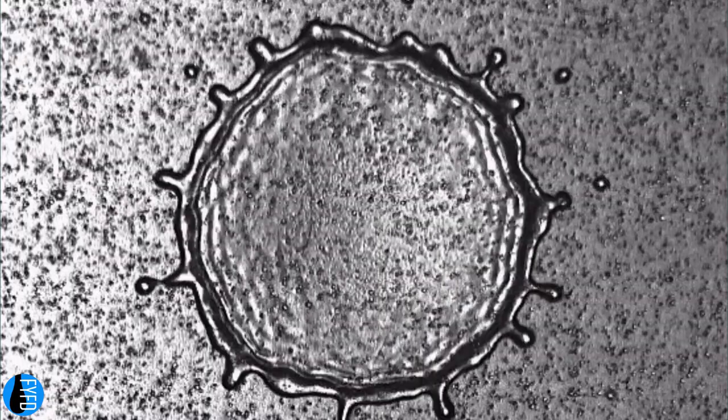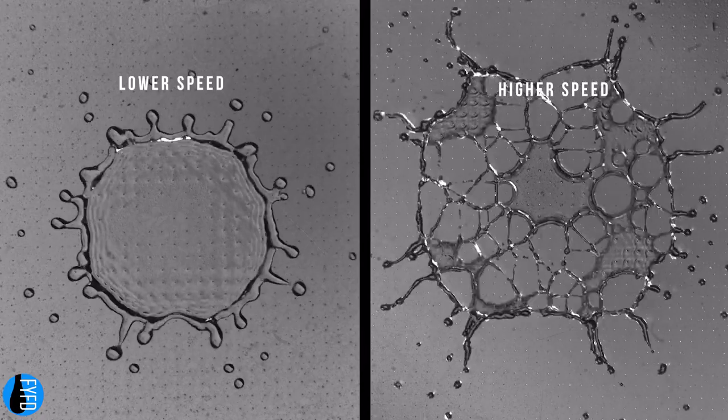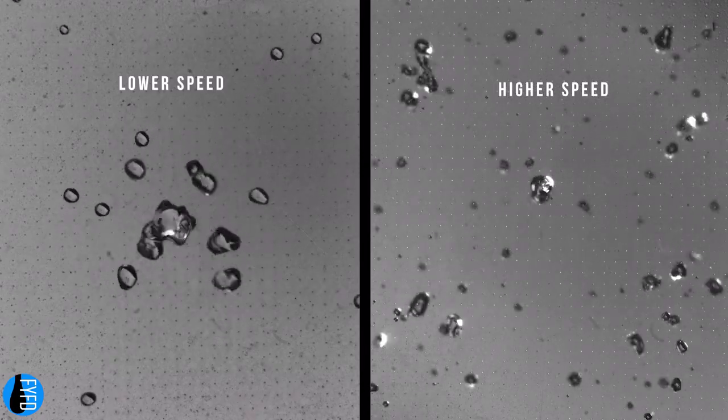At the right impact speed, the shock-like waves can actually create holes in the drop. As the speed at impact increases, more holes develop, helping rip the droplet apart.